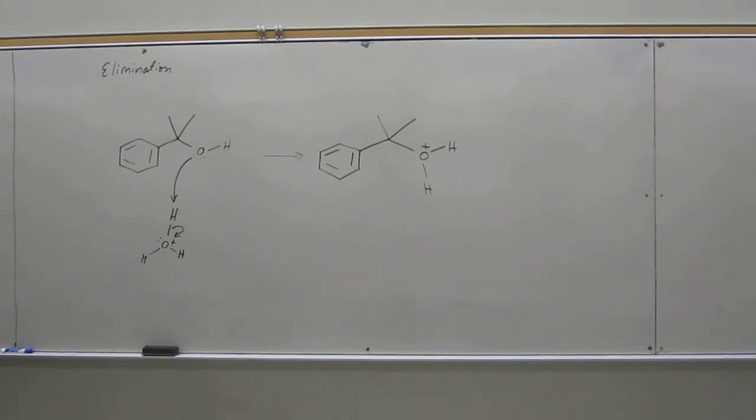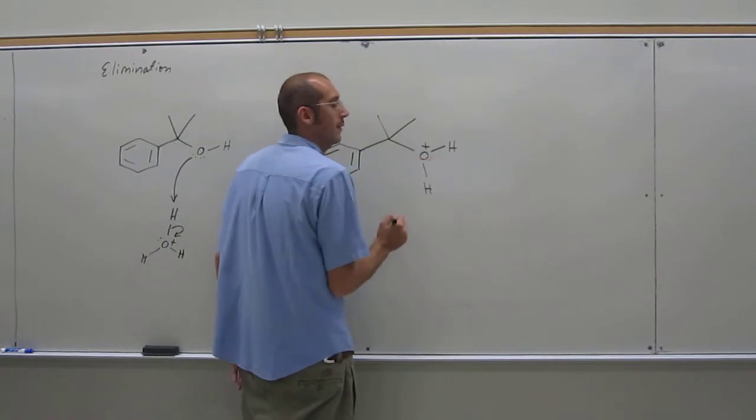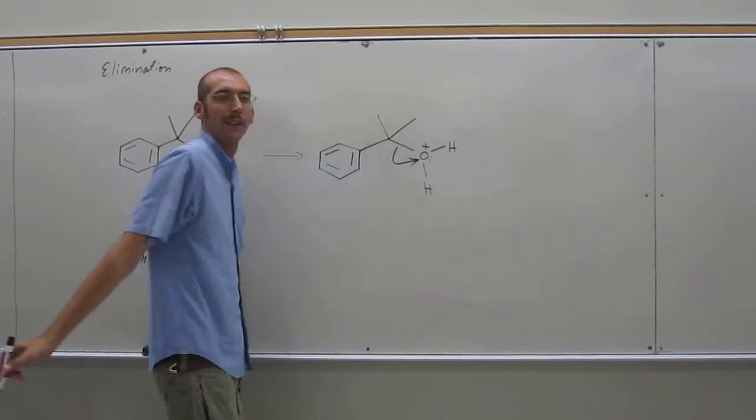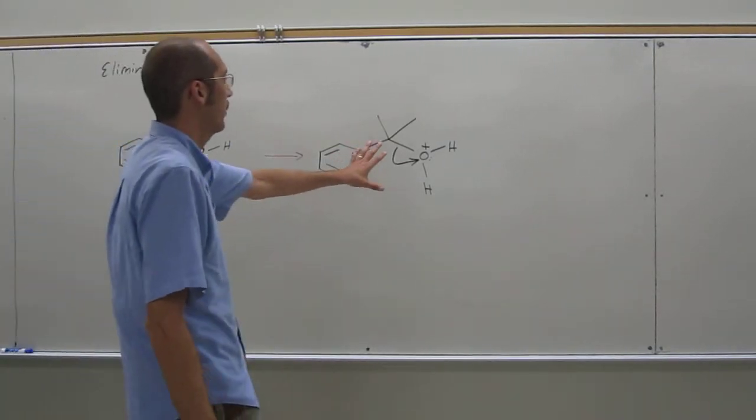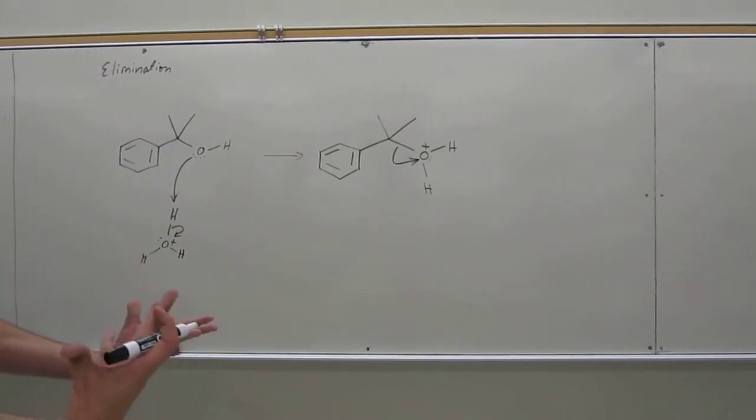So we've got that. And good leaving group leaves. Why would that leaving group leave at that point? It's more stable. It's more stable, why?